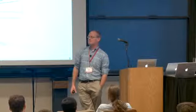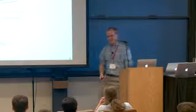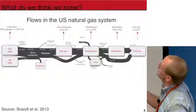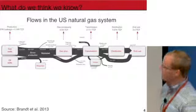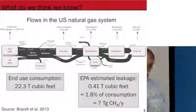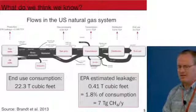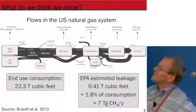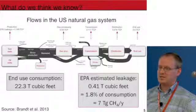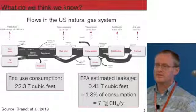Question: how much of the 7 teragrams comes from pipe clearances on the transmission system? The EPA estimate for transmission is about 0.117 out of 0.4 trillion cubic feet — so maybe a quarter of it is from transmission. A lot of that is from compression; transmission-grade compressors are a large source.